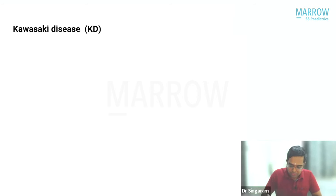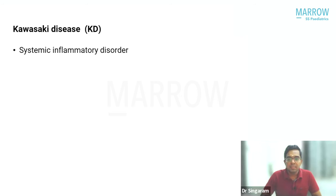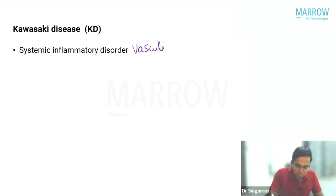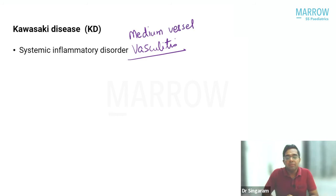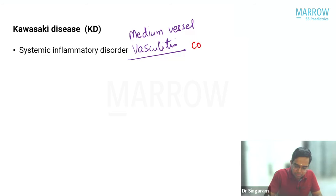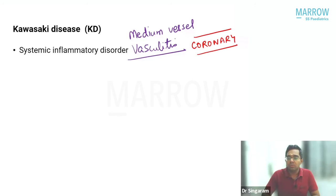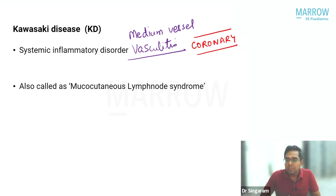Kawasaki disease is an important systemic inflammatory disorder characterized by vasculitis — specifically medium vessel vasculitis. The most importantly affected blood vessels are the coronary arteries, which gives it direct cardiac implication and makes this topic very important for exams.